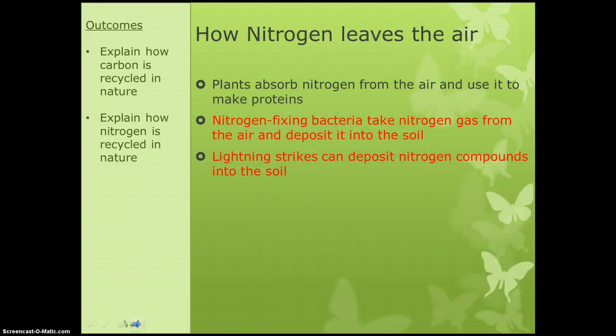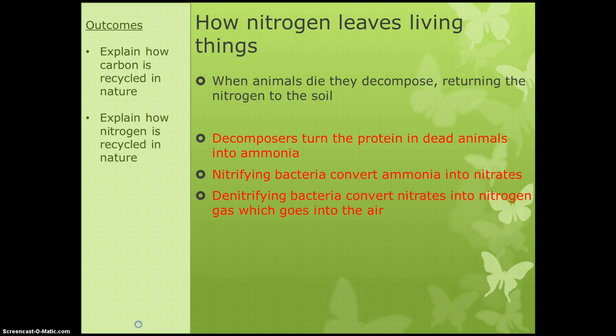How does nitrogen leave the air? For the lower tier, we just need to know that plants absorb nitrogen and use it to make proteins. For the higher tier, we need to know that nitrogen-fixing bacteria take nitrogen gas from the air and deposit it into the soil. You also need to know that lightning strikes can deposit nitrogen compounds into the soil. How does it leave? For foundation, when animals die they decompose and the nitrogen goes back into the soil. For higher, decomposers turn the proteins from dead animals into ammonia; nitrifying bacteria convert the ammonia into nitrates; and denitrifying bacteria convert the nitrates into nitrogen gas, which then goes into the air.